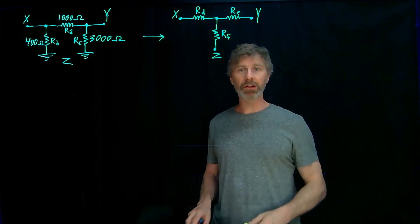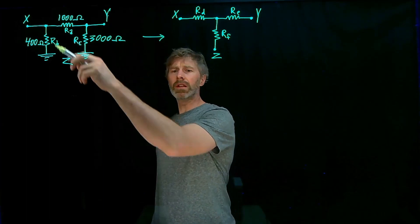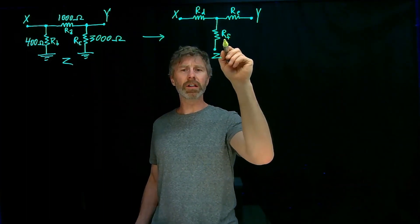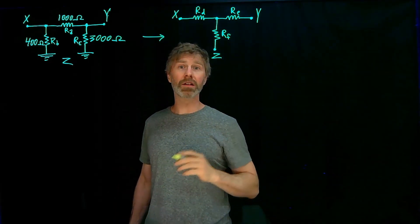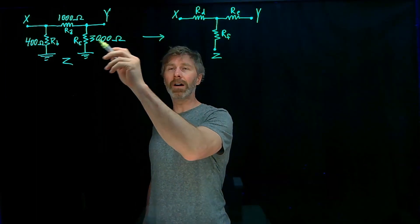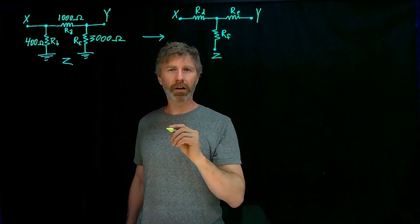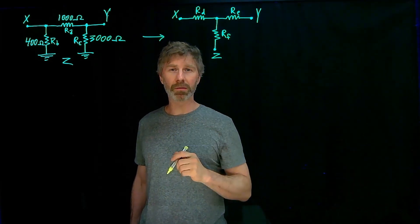I'm just going to go through the mechanics of this actual conversion. So what we have is the pi network on this side. We want to figure out what the Rd, Re, and Rf values are that will give us the equivalent network of this pi network. There are some simple equations that I'm not going to derive here but have been derived before, and again look in the description below and you can find some links to where those derivations come from.